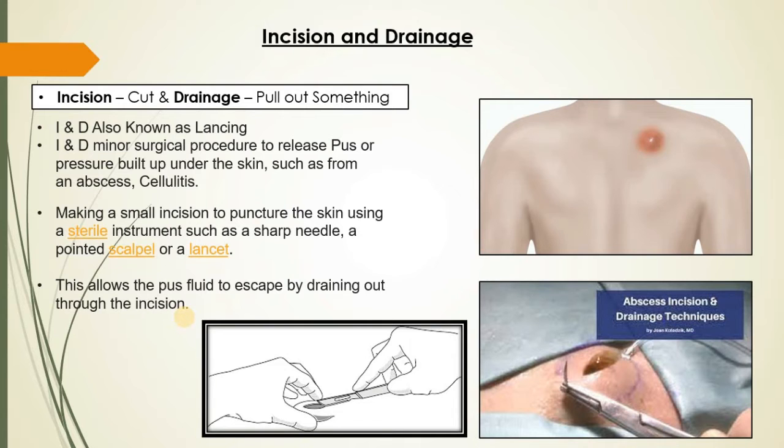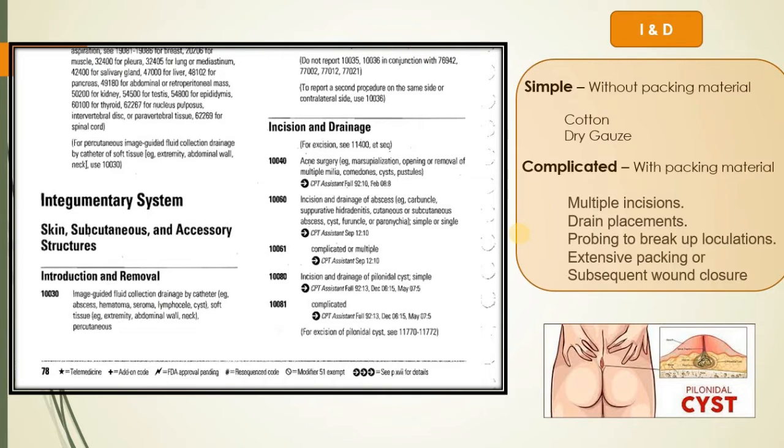So next we will see CPT codes. Incision and drainage you can see in CPT book where the CPT code started from 10,000 series. So here you can see 10040, 10060, 6180, 81 like that. Incision and drainage always found in 10,000 series and this is the CPT book screenshot where you can find the description of CPT codes. So here in this video I will explain very simple and common CPT codes so you can understand the importance of CPT codes and description.